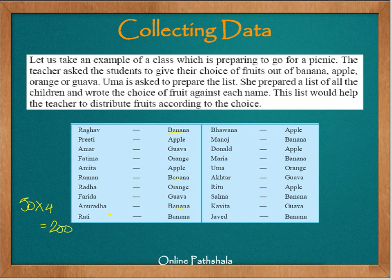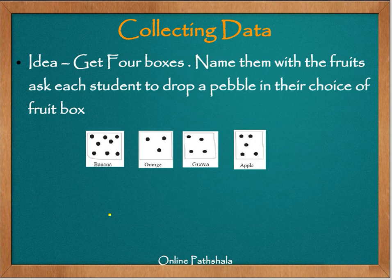Let's make it simpler. One option is to take 4 boxes labeled banana, orange, guava, and apple, and ask each student to put a pebble of their choice into the corresponding basket. Then the teacher or a student just has to count the number of pebbles in each basket to identify how many of each fruit are required. That makes sense — it's much simpler.